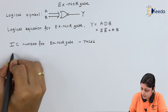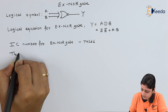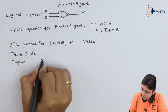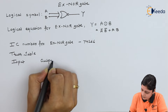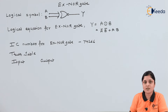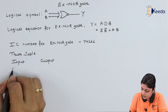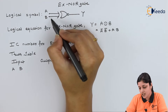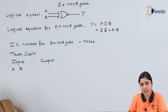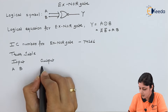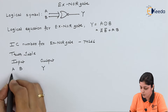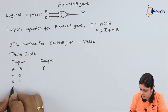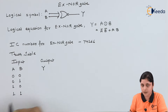Now we will discuss the truth table, showing inputs and output. The inputs are A and B, and the output side is Y. The possible input combinations are four: 0-0, 0-1, 1-0, and 1-1.